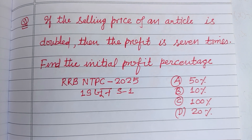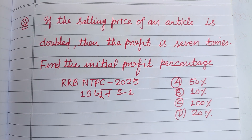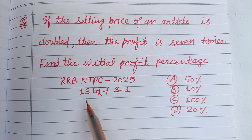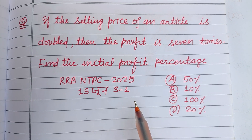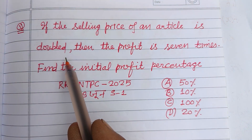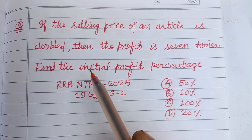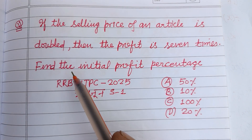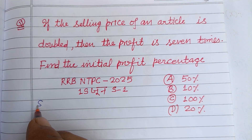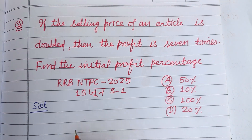Hello viewers, warm welcome to this YouTube channel. This question is from RRB NTPC 2025, dated June 19, 2021. The question states: if the selling price of an article is doubled, then the profit becomes seven times. Find the initial profit percentage. This question is related to profit and loss.